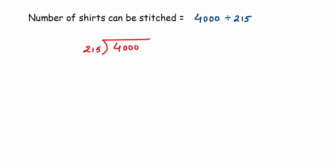First we take 400. We know 215 × 2 would be greater than 400, so we don't take 2. We take 1: 215 ones are 215. Subtracting 215 from 400, we get 185. Now we drop the 0, giving us 1850.